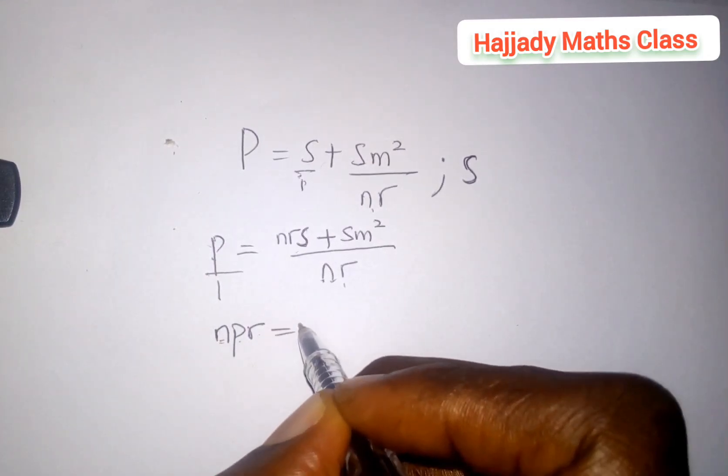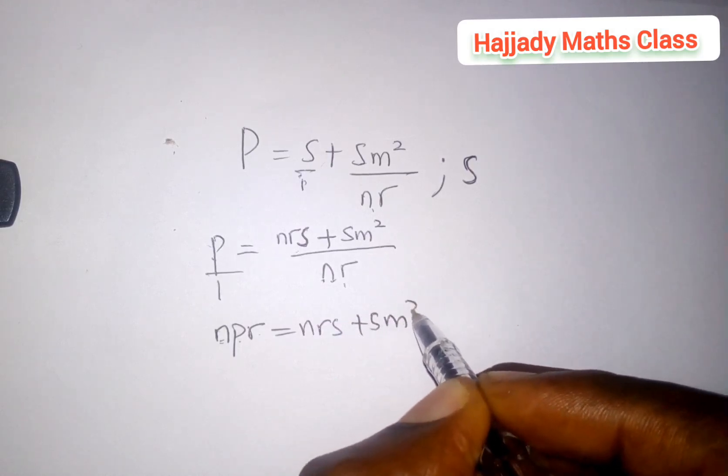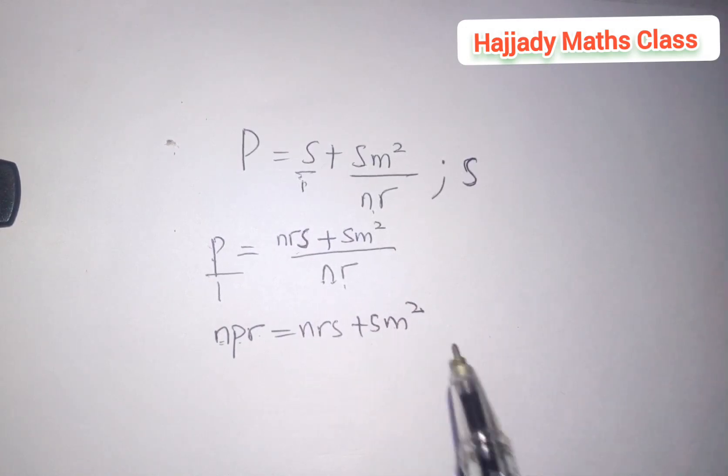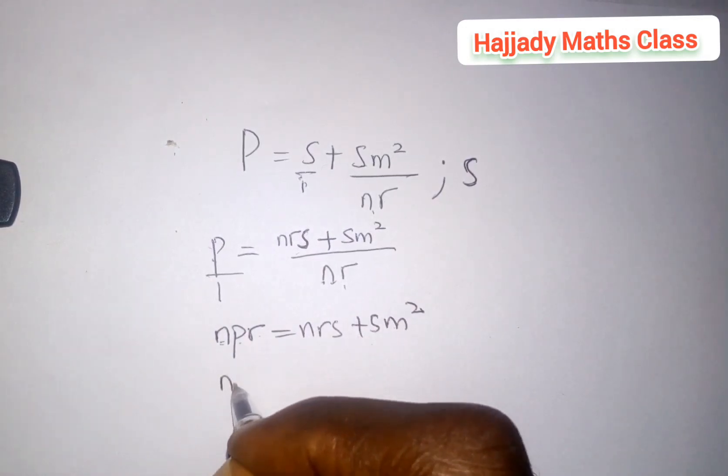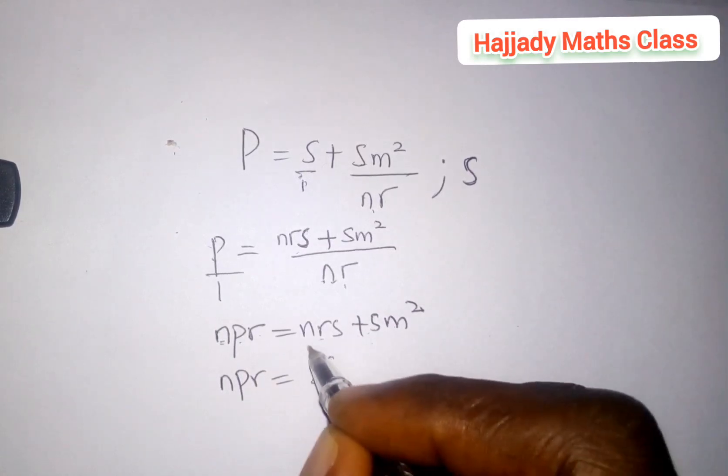Now looking at these two, since we want to make s the subject of the formula, we can possibly factorize s. So here we have npr equals, s is common, so I'm left with nr plus m square.